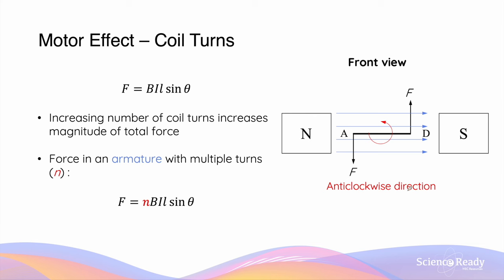Typically, when constructing a simple DC motor setup, we can add multiple loops of wire so that the number of turns increases. If we have more loops of wire inside a magnetic field, each loop will be acted upon by its own magnetic force.